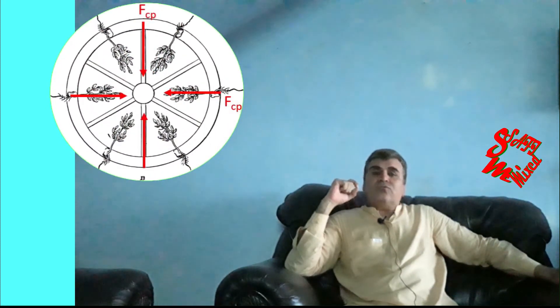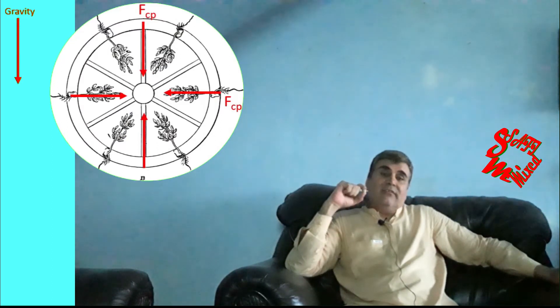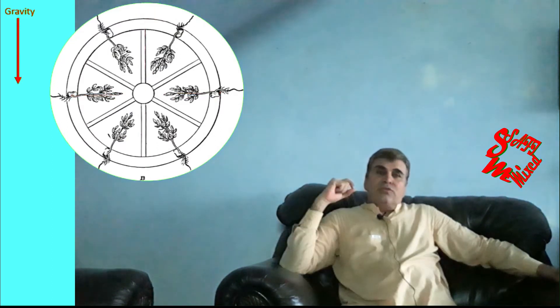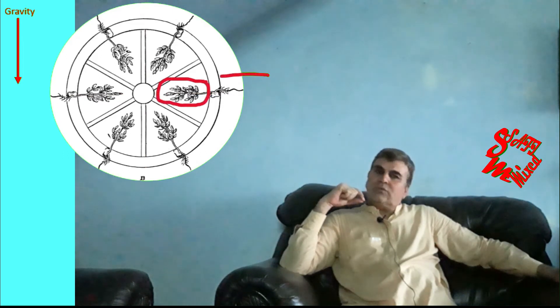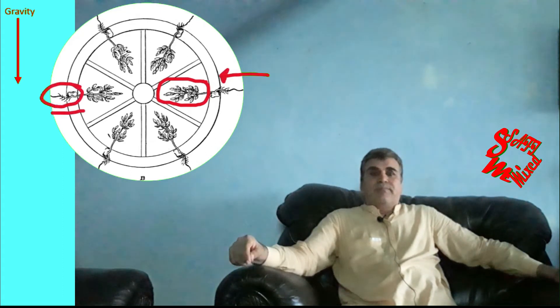As the germinated plant grew, each shoot was directed towards the center of the wheel. When the shoot passed the center of the wheel, the tip turned back so that the growth was still centripetal. The roots grew away from the center.